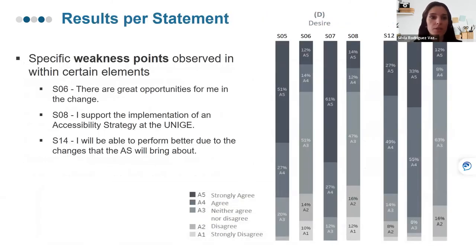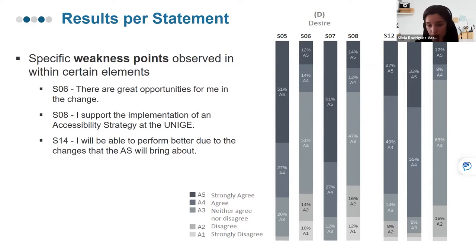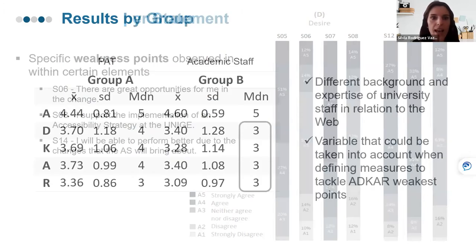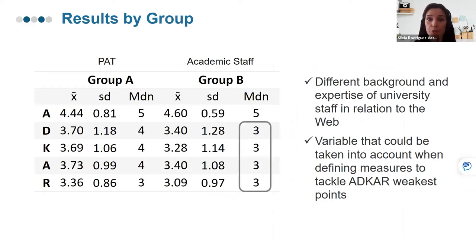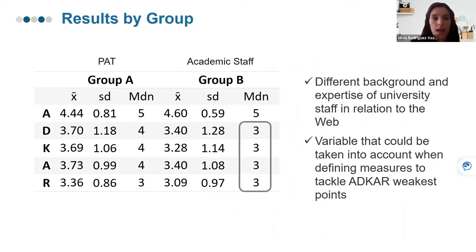It was also interesting to note specific weakness points within certain elements. For instance, participants were quite skeptical when it comes to understanding the benefits of that change for them in their work. Looking at results by group, we observed some differences: although not statistically significant, academic staff scored lower in all elements but awareness, possibly due to different levels of expertise in relation to the web.